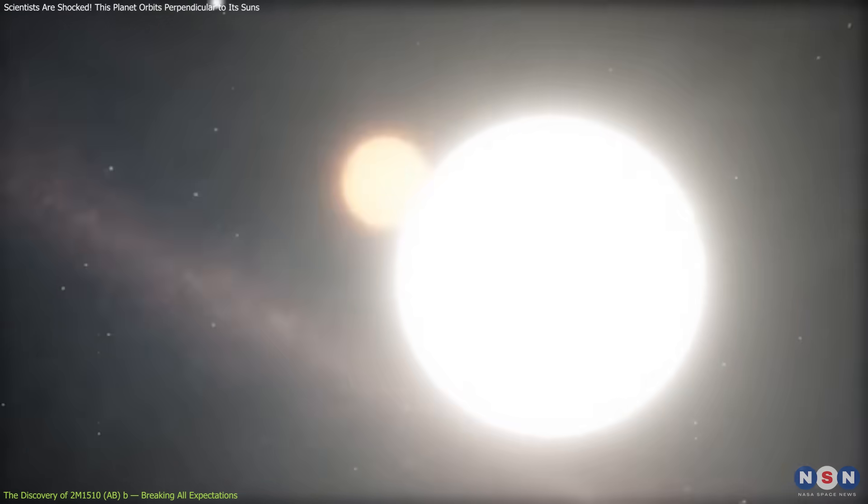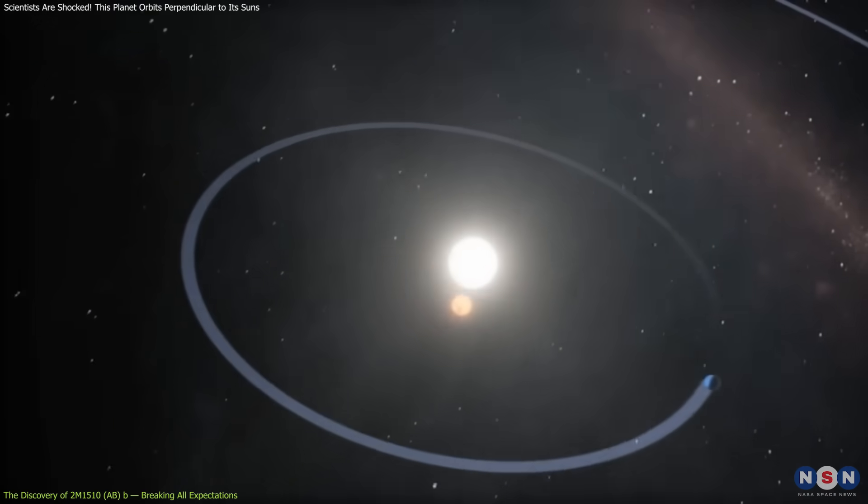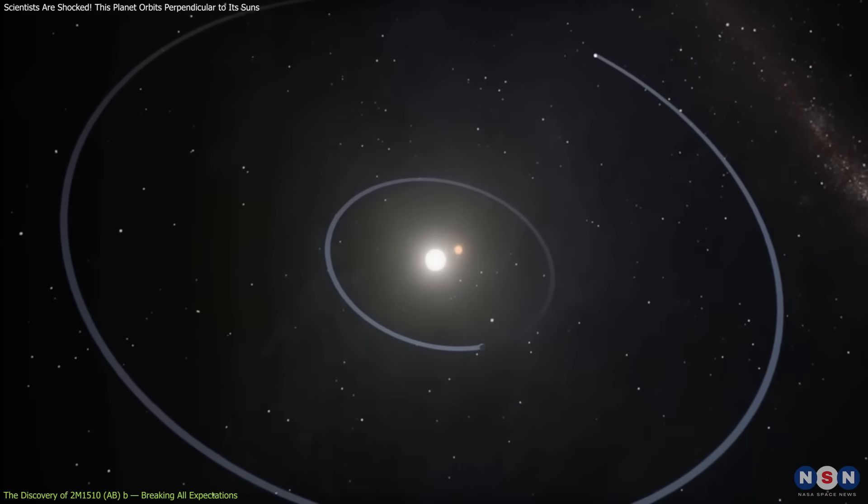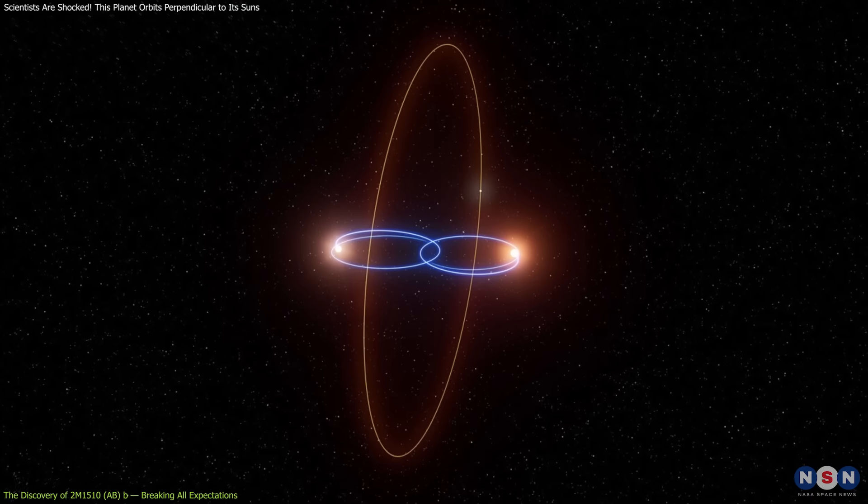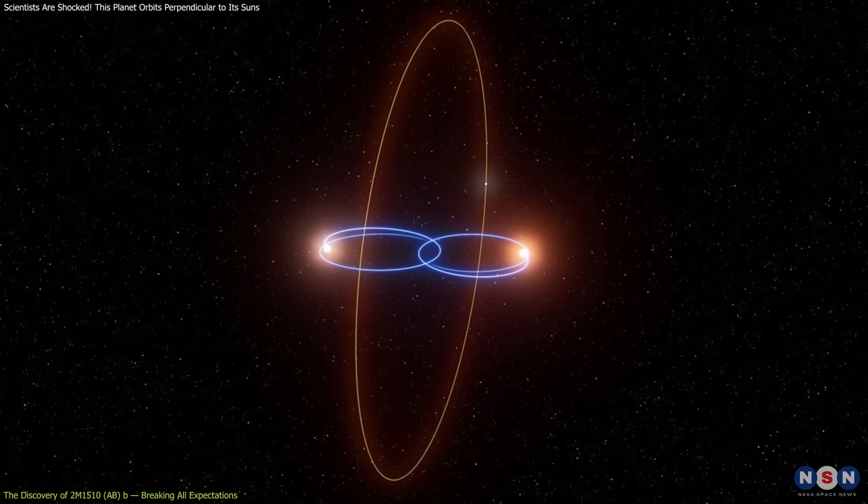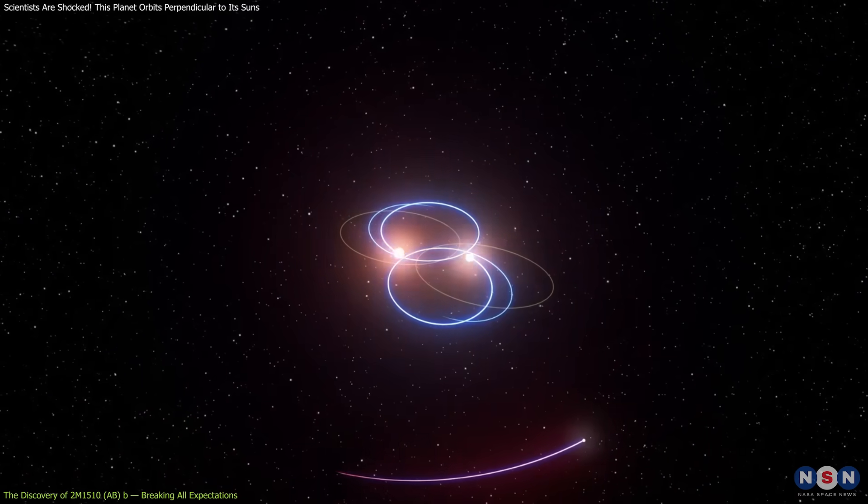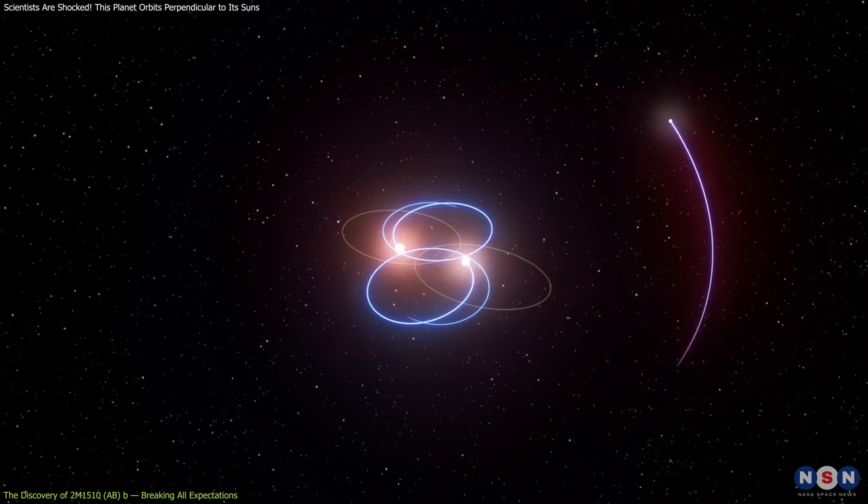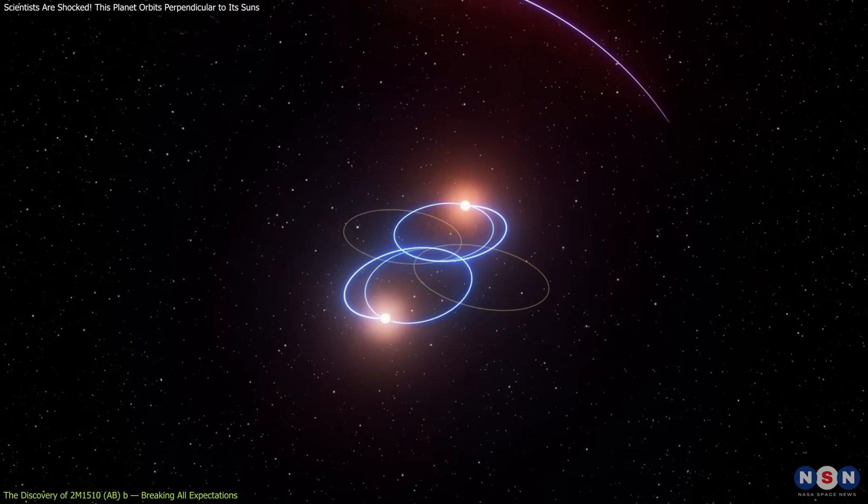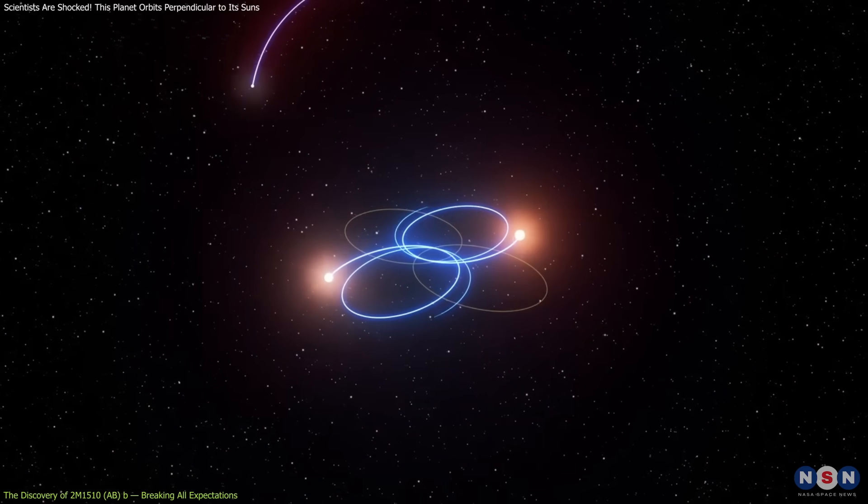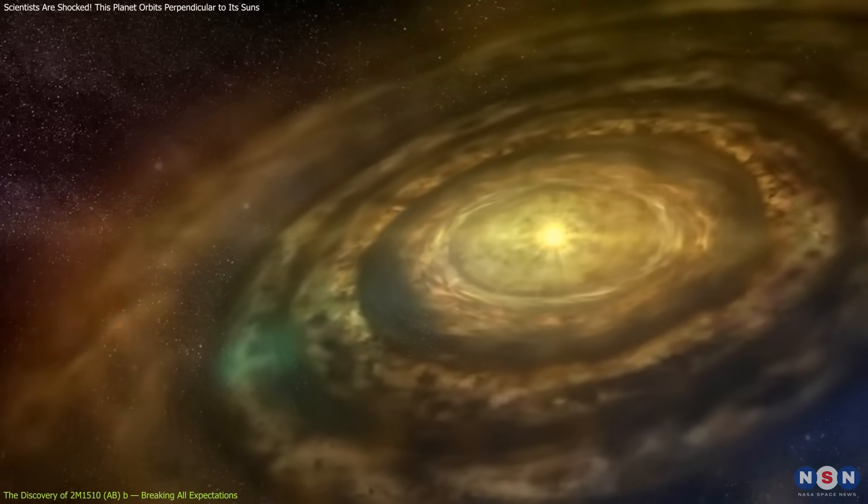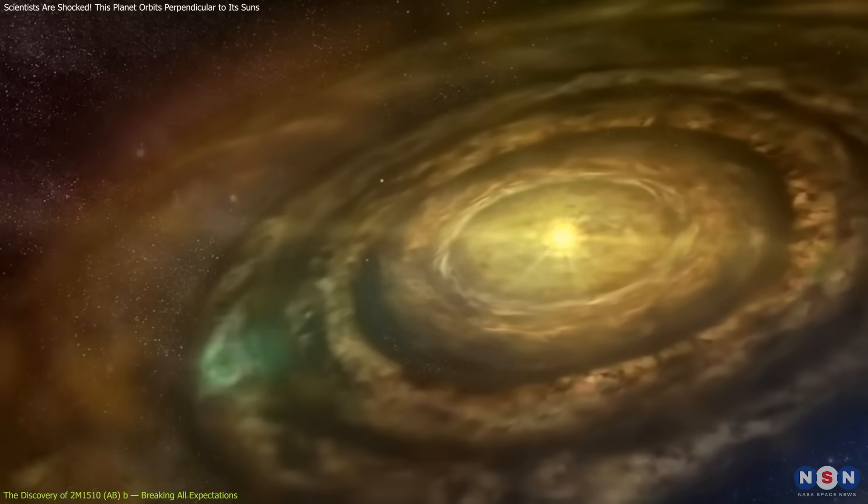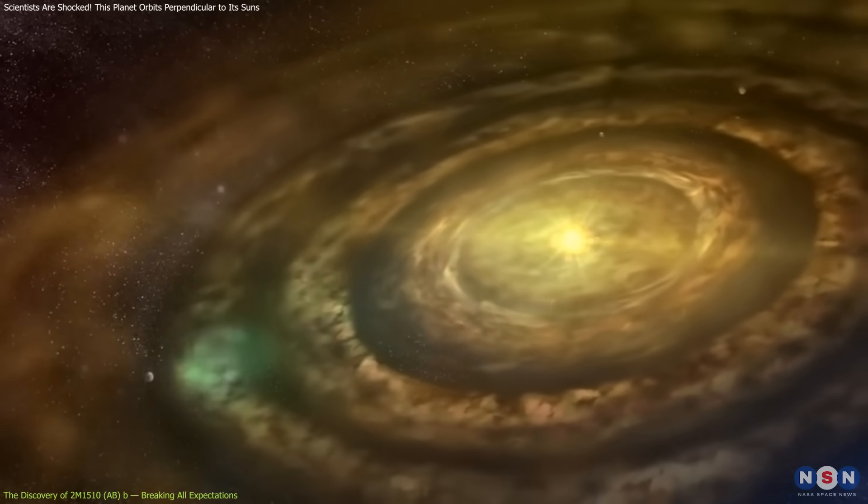More astonishingly, the calculations revealed that this planet wasn't orbiting along the same plane as the brown dwarfs. Instead, its orbit was perpendicular, like a spinning top rotating around the edge of a table. This kind of polar orbit, while theoretically possible, had never been observed around a binary system until now. In fact, models of planet formation struggle to explain how a planet could even end up there. Forming in a disk perpendicular to the stars would be almost impossible under standard conditions.